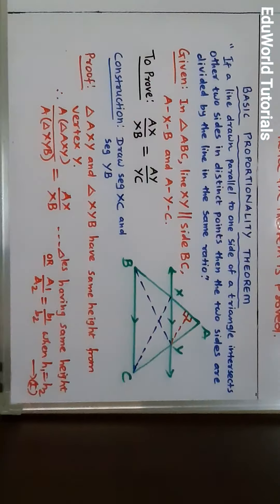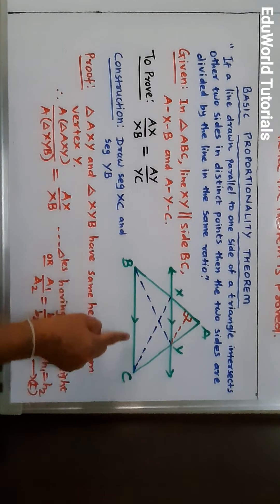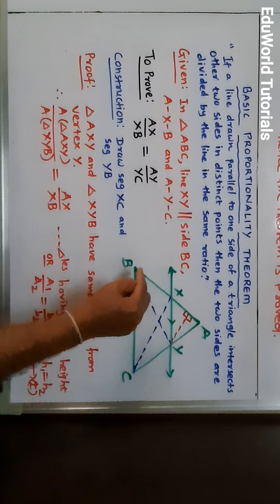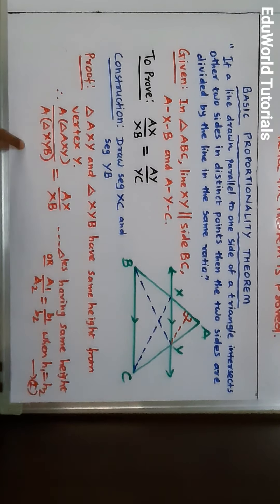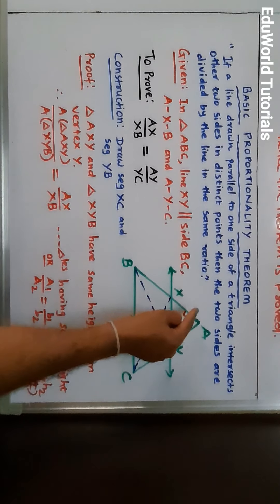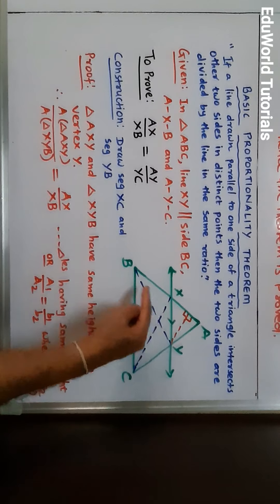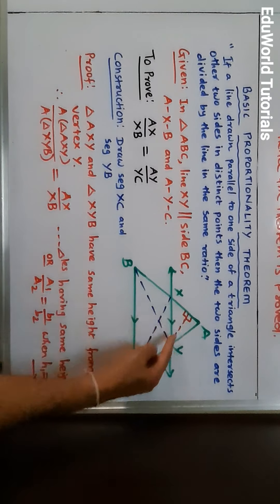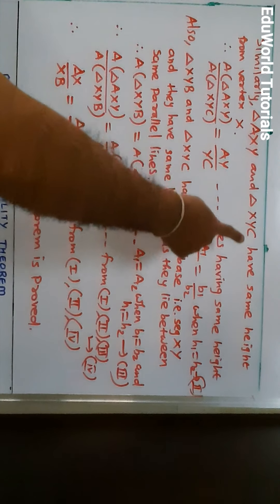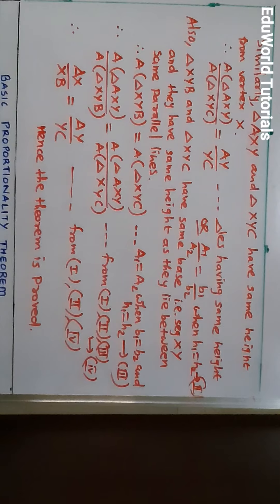I will show you the first screen again so you can understand. In triangle ABC, line XY is parallel to side BC such that A-X-B and A-Y-C. We have to prove AX upon XB is equal to AY upon YC. Triangle AXY and triangle XYB have the same height from vertex Y; therefore their areas are proportional to corresponding bases — AX in triangle AXY and XB in triangle XYB. That is Result 1. Triangle AXY and triangle XYC have the same height from vertex X; therefore area of triangle AXY upon area of triangle XYC is equal to AY upon YC.